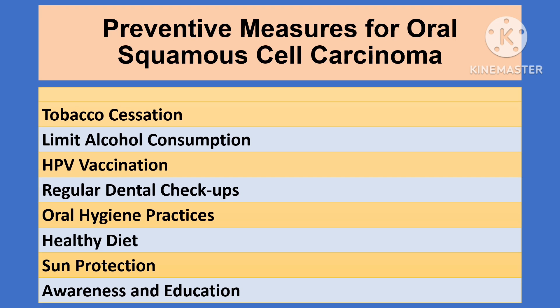Regular dental checkups and maintaining good oral hygiene are important preventive measures. Adopting a healthy diet and lifestyle is also beneficial. Use of lip balm with SPF and wearing hats can protect the lips from harmful UV radiation, which is a risk factor for developing lip cancer. Finally, awareness is key — informing the public about risk factors and early signs of oral cancer can lead to earlier intervention and better prognosis.